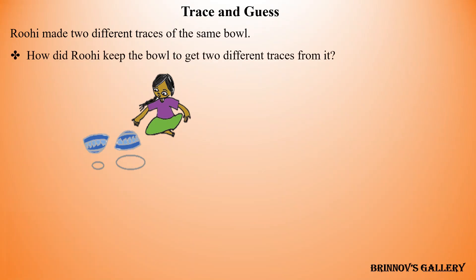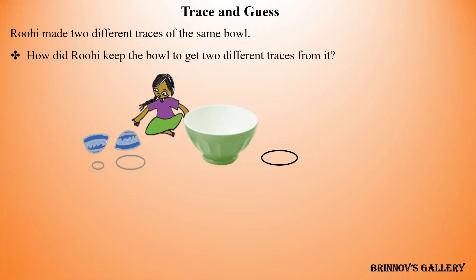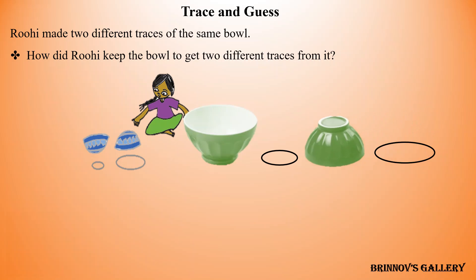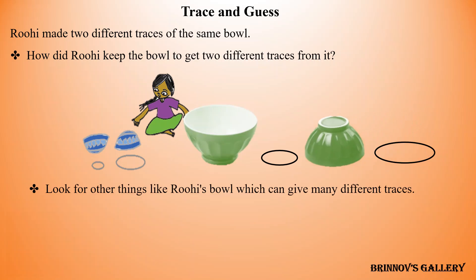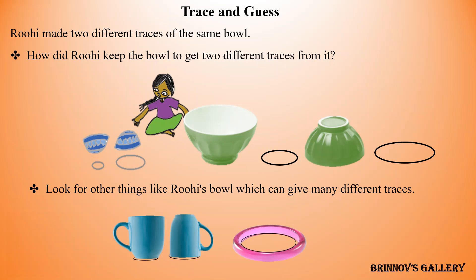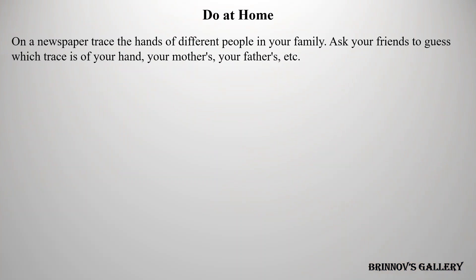Look for other things like Ruhi's bowl which can give many different traces. Do at home: on a newspaper, trace the hands of different people in your family. Ask your friends to guess which traces belong to your hand, your mother's, your father's, and so on.